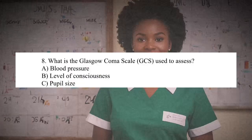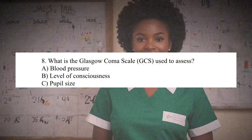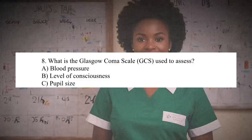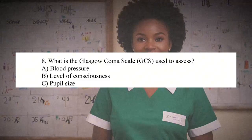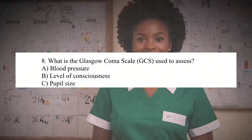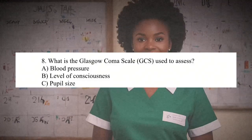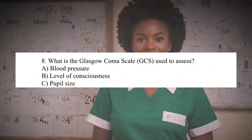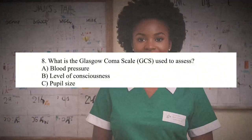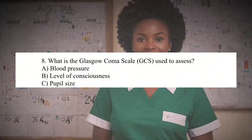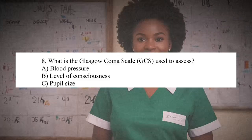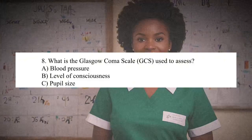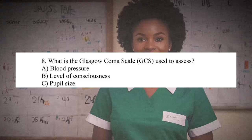Question 8: What is the Glasgow Coma Scale (GCS) used to assess? A. Blood pressure. B. Level of consciousness. C. Pupil size. Answer: B. Level of consciousness. Rationale: The Glasgow Coma Scale (GCS) is used to assess the level of consciousness.